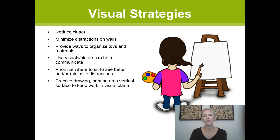To summarize visual strategies: reduce clutter and minimize distractions on the walls; provide ways to organize toys and materials using bins and boxes with visual labels; use visuals or pictures to help communicate, such as visual schedules and picture routines. In classroom or learning situations — homeschool, homework, therapy, tutoring or music lessons — think about where your child is sitting so they can see well and minimize distractions from windows, doors or hallways. For practicing drawing or printing, use a vertical surface such as an easel or slant board so the work stays in the visual plane right in front of their face.